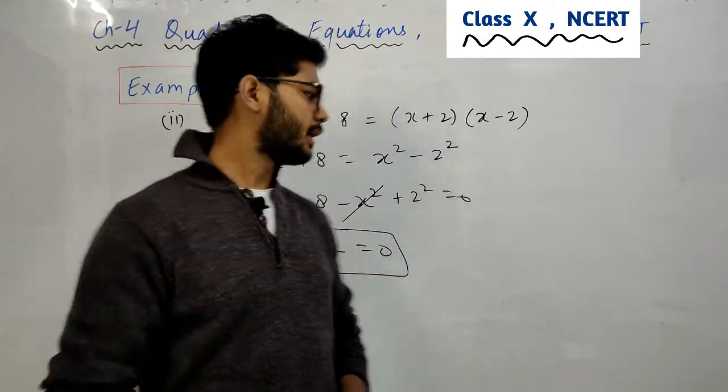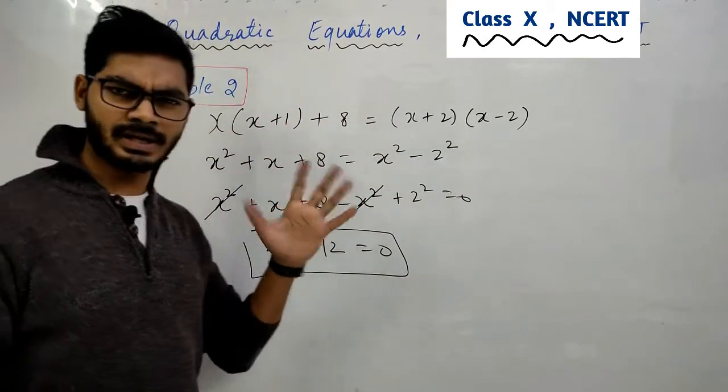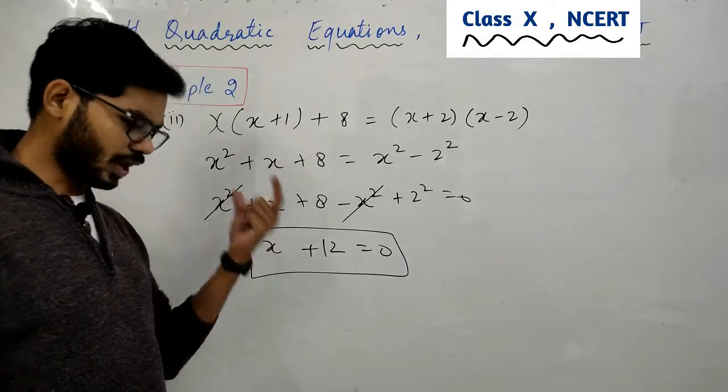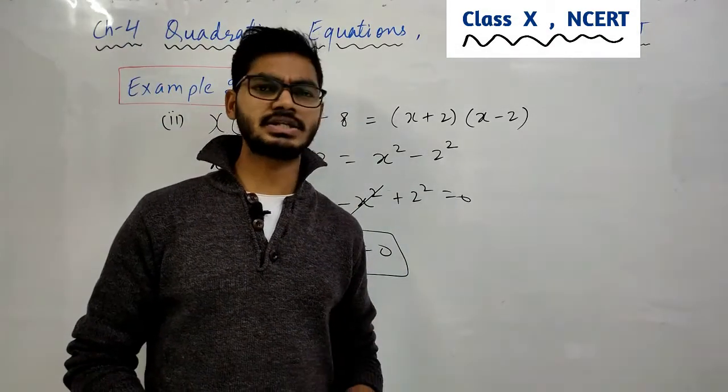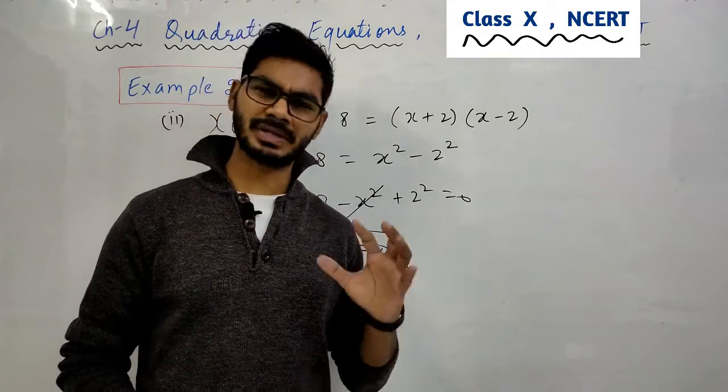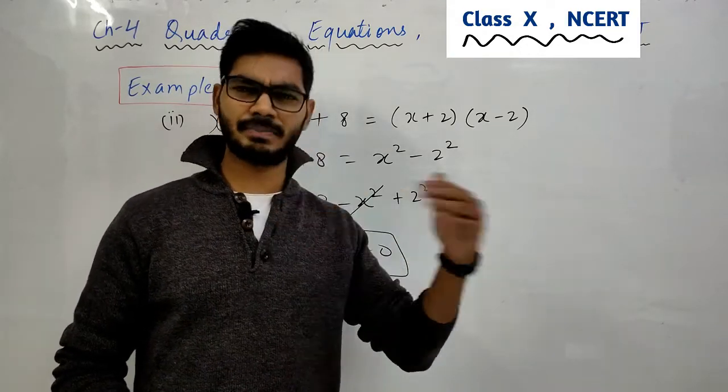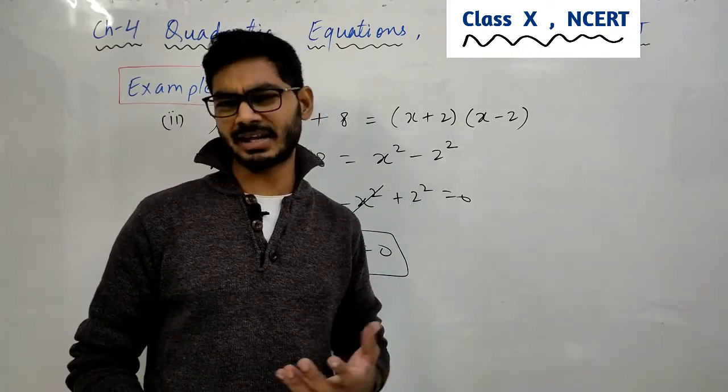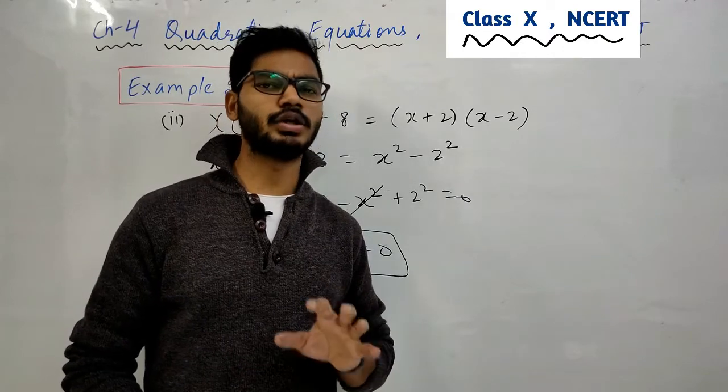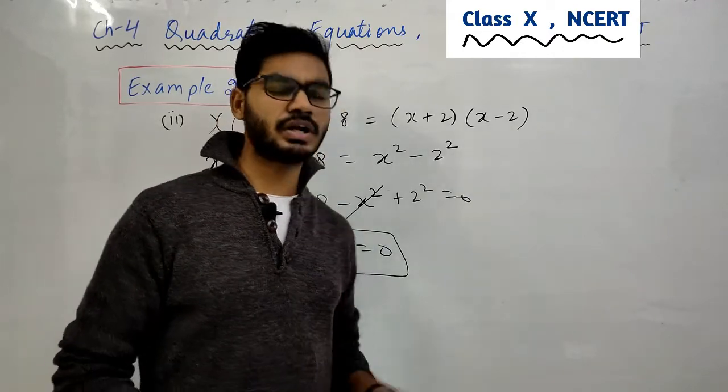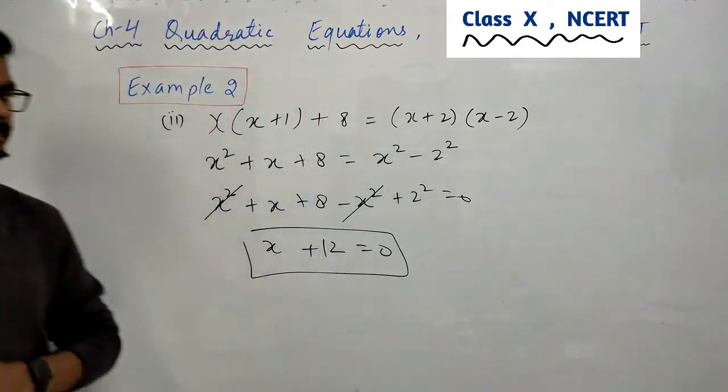Now you can see here is x square. If x square not then this is quadratic equation not. Here is the quadratic equation polynomial. Polynomial chapter I will have to do, please note it down.